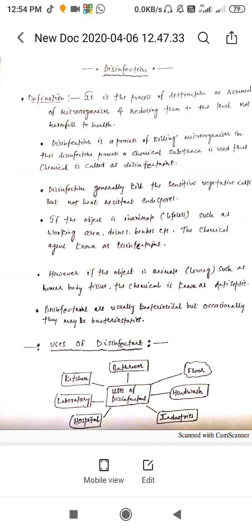If the object is inanimate, meaning lifeless places such as working areas, dishes, benches, etc., the chemical agent is known as disinfectant. However, if the object is animate, meaning living such as human body or tissue, the chemical is known as antiseptic.